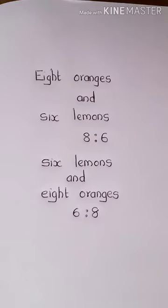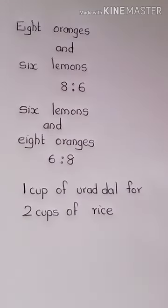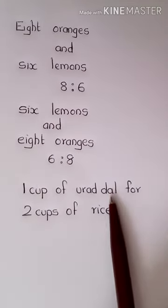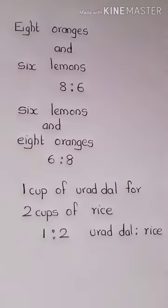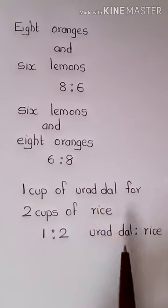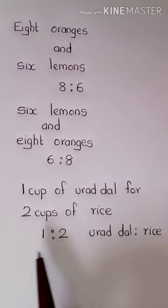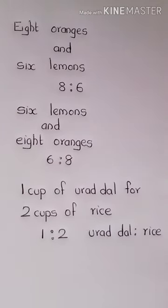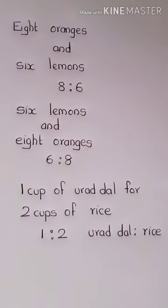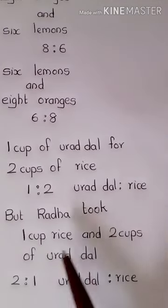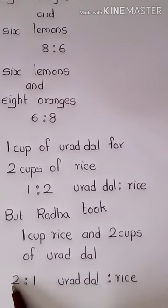To illustrate this, here is a story. Radha asked her mother how to make dosa. Her mother replied: take one cup of urad dal for two cups of rice — that is, the ratio of urad dal to rice is 1 is to 2. But on the day of making dosa, Radha took one cup of rice and two cups of urad dal — that is, a 2 is to 1 ratio.